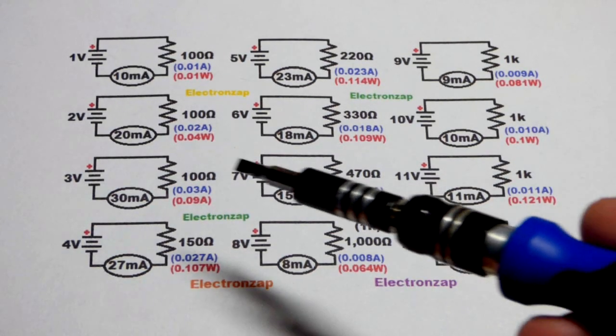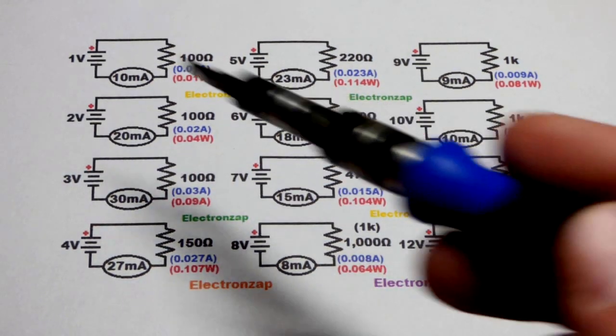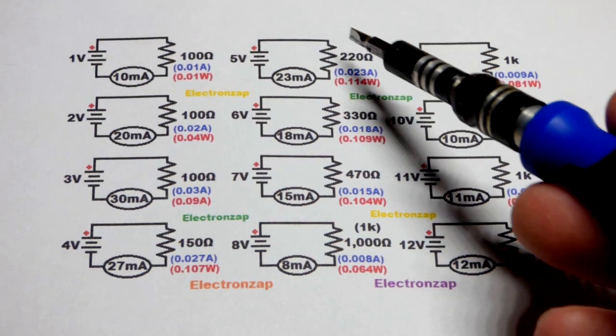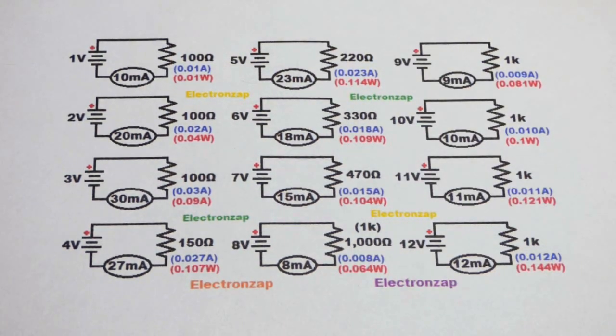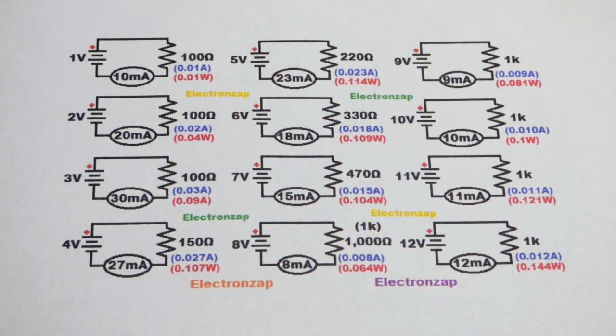So now in this video, we're going to look at some examples of different voltages being put across different value resistances, which I think will be helpful for many people starting out in electronics.